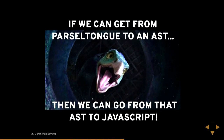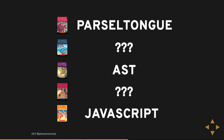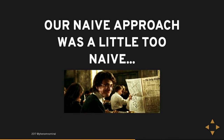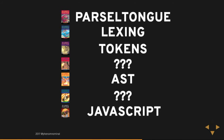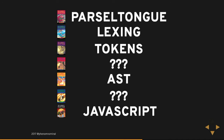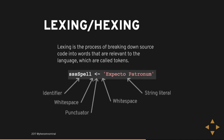What that means is: if we can get from Parseltongue to an AST, then we can go from that AST into JavaScript. So now we've got a few more steps — we know we have to somehow get to an AST. Our naive approach was just a little bit too naive. Let's do something a bit more robust, something that's actually a proven thing that people do. First thing we're going to do is a process called lexing, and what that does is it gives us tokens.